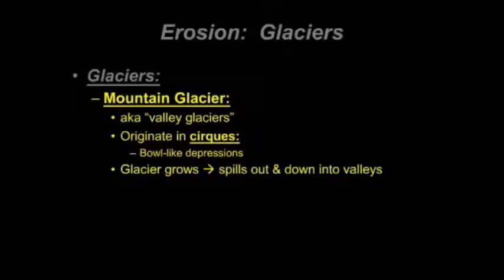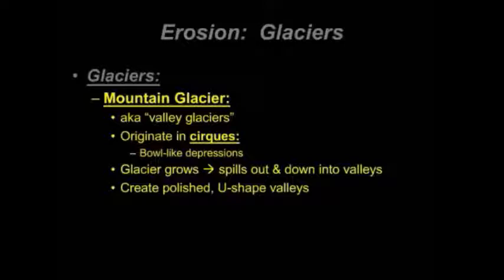As that glacier grows, it's going to spill out and go down into the valleys. Those valleys oftentimes were created previously by rivers that came through the area. Rivers have a characteristic V-shaped valley, whereas in the case of glaciers, we see a very polished U-shaped valley. One key characteristic that distinguishes erosion from rivers and erosion from glaciers is the shape of the valleys that they create.